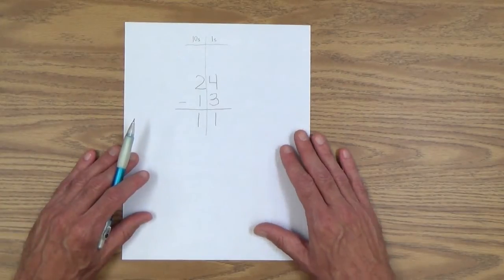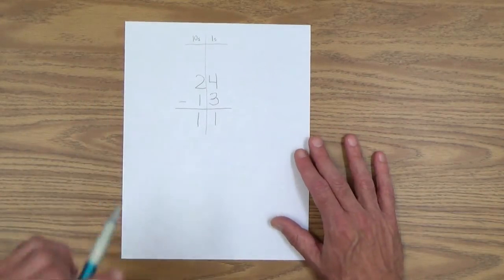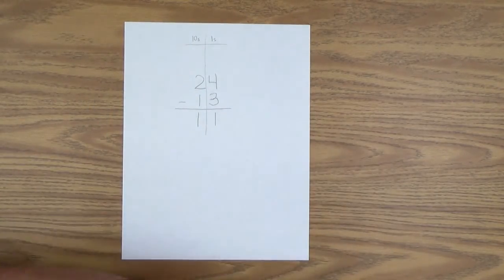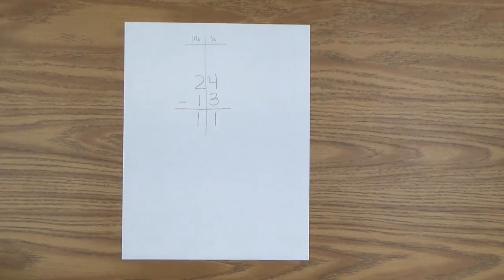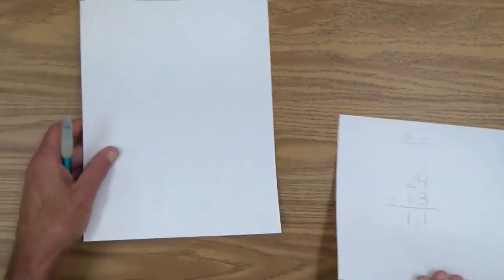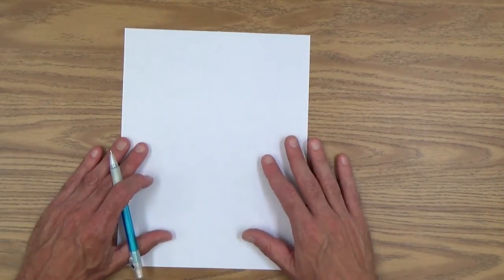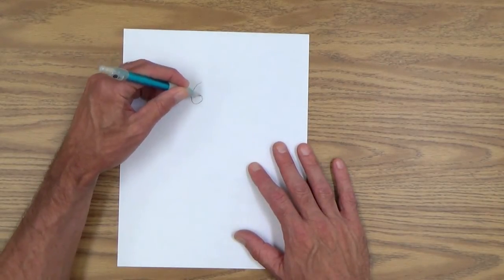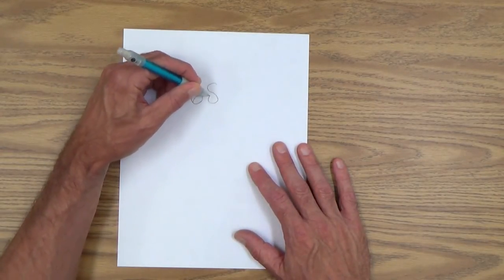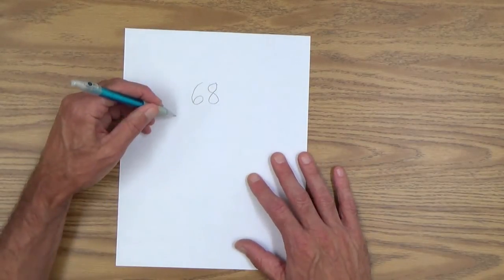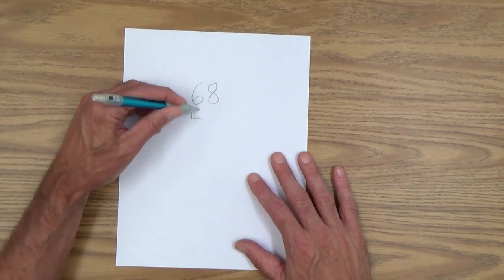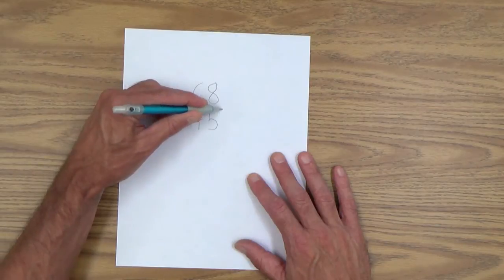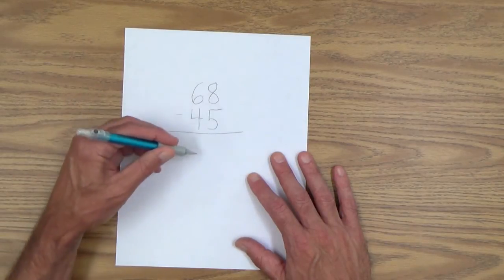And you can dictate a problem to her and let her get a little more involved. Now, let me start with a clean sheet of paper. Okay. All right. Let's see. How about this one? 68 minus 45 equals how many?